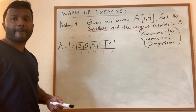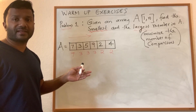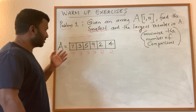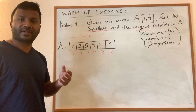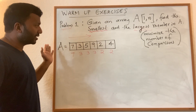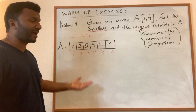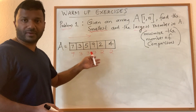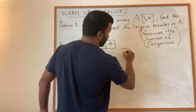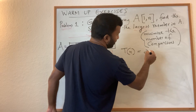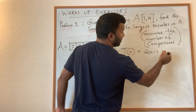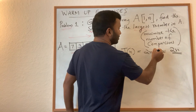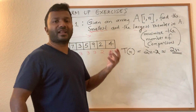The number of comparisons to find the minimum is n minus one. Similarly, to find the largest number, initialize current maximum with the first element, scan left to right, keep updating current max, and at the end you have the maximum. The total number of comparisons for this algorithm is T(n) = 2n minus 2, roughly 2n.